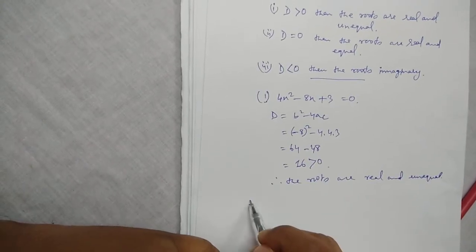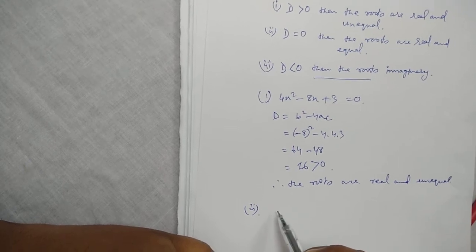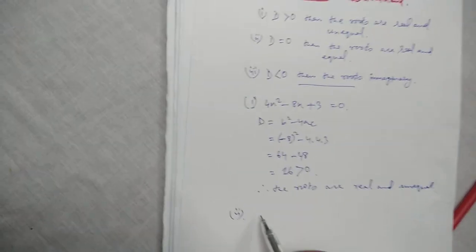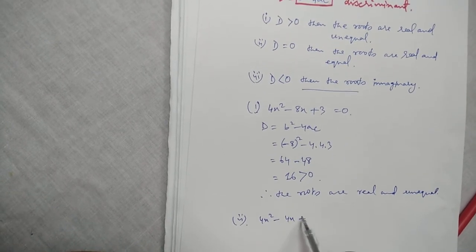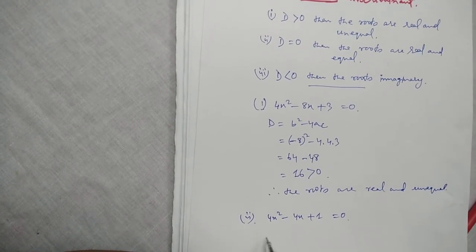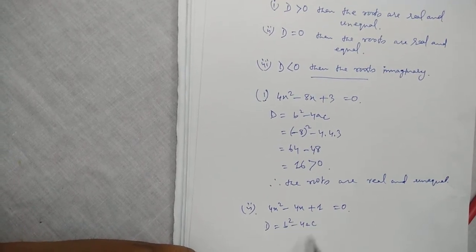Number 2, for example, suppose the equation is 4x square minus 4x plus 1 equal to 0. In this case, we will find discriminant D equals b square minus 4ac.